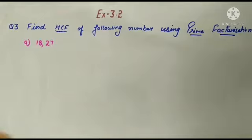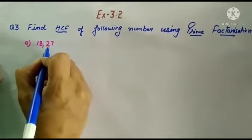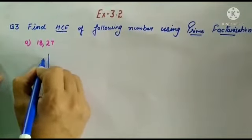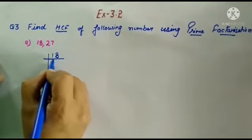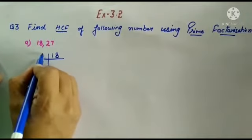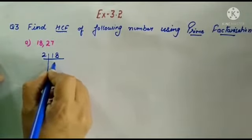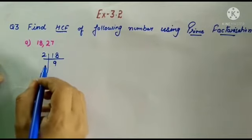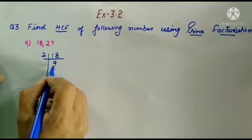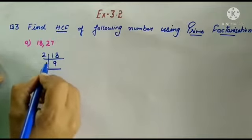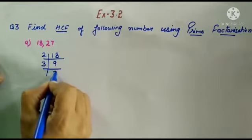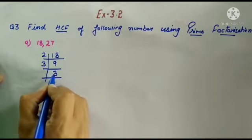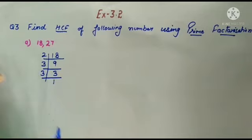So first of all, we have part a: 18, 27. First, we need to use prime factorization. Now 18, we have 2 table. 2 times 9 is 18. Now 9, 2 table - no. 3 table, yes. So 3 table, 3 times 3 is 9. Then 3 times 1.